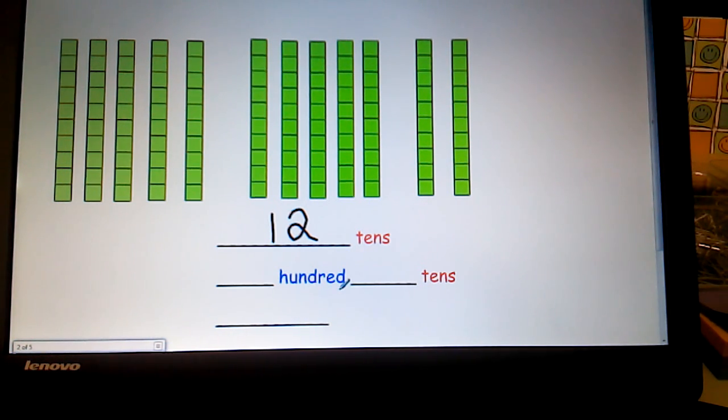The next thing they have been working on is how it's a lot easier for mathematicians to group ten tens as one flat or one group of hundred. This is the next base ten block they have been working on.